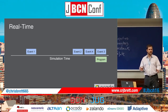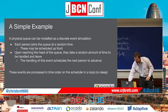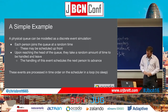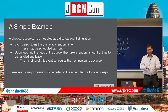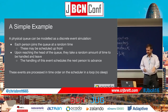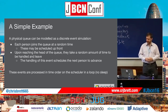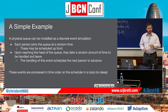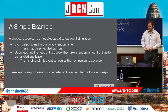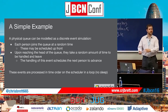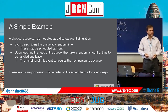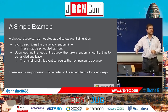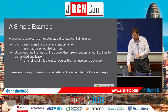We've got a simple example: a physical queue where people are queuing for a counter. Each person joins the queue at a random time; these times might be scheduled up front. Upon reaching the head of the queue they take a certain amount of time to be served and then leave. Each time someone leaves we can schedule another event for the next person to be served. These events are processed in time order, so we jump from event to event without sleeping, which means we can simulate a certain amount of time in much less time than that.